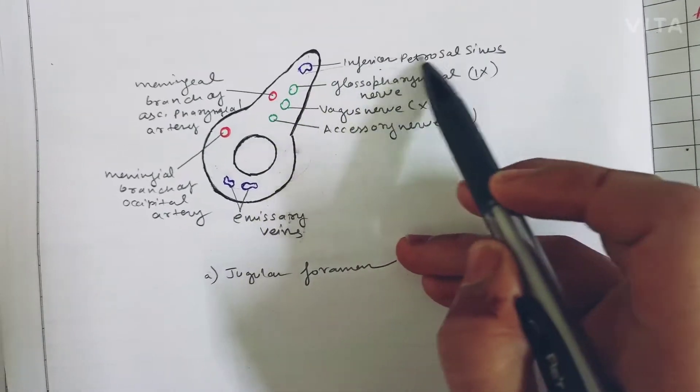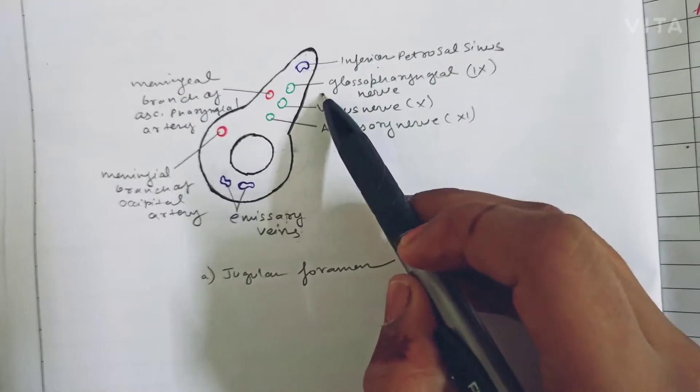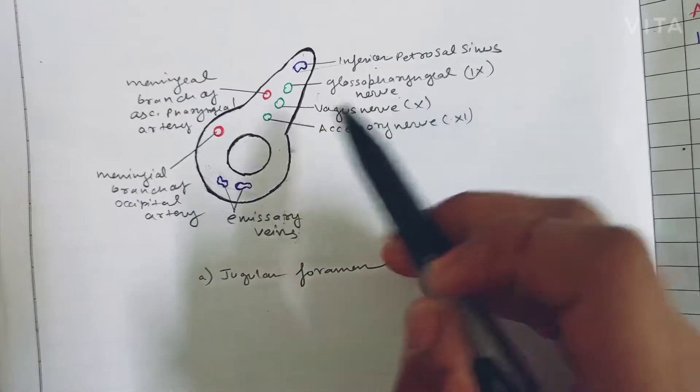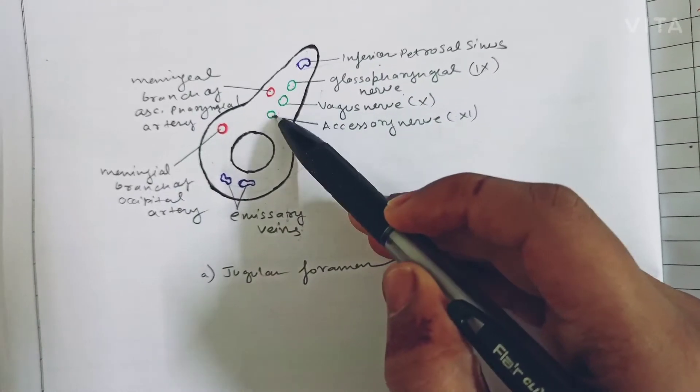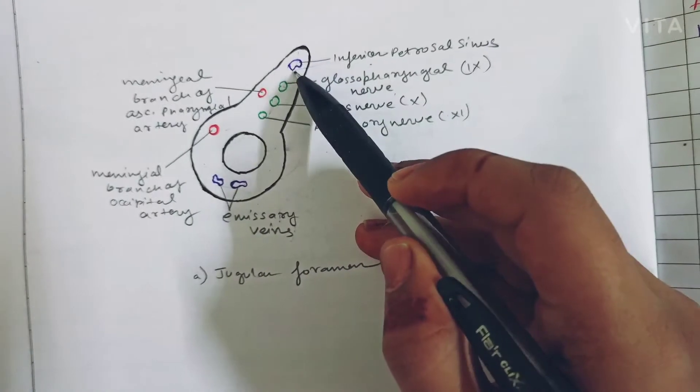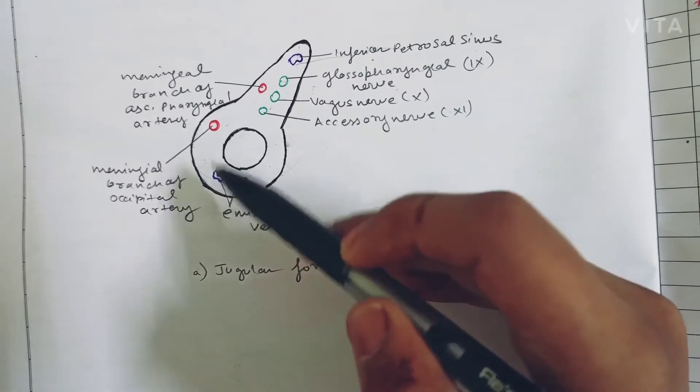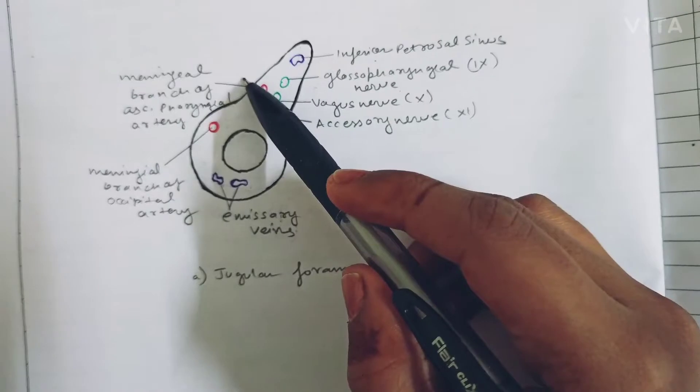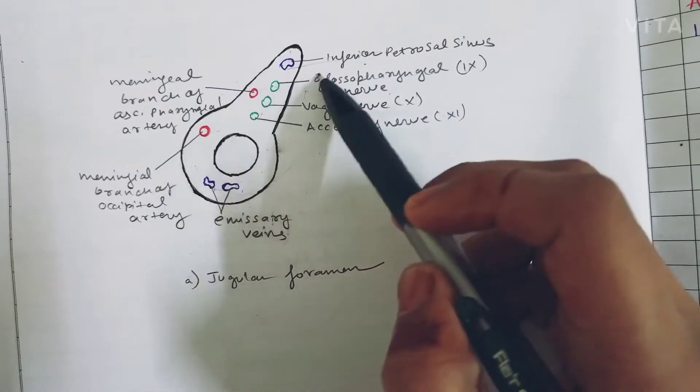The structures include inferior petrosal sinus and glossopharyngeal nerve. See, the nerves I have made from green color, arteries are made from red color, and veins are made from blue color. We are dividing this foramen into three parts: anterior, middle, and posterior.